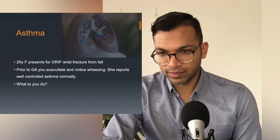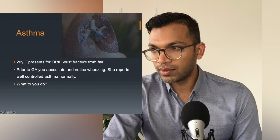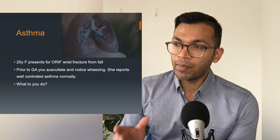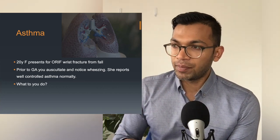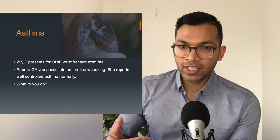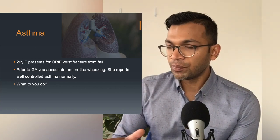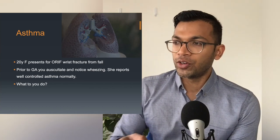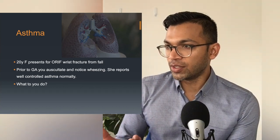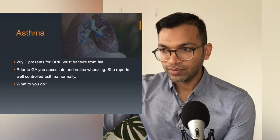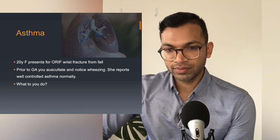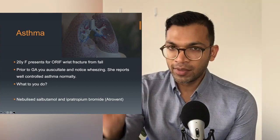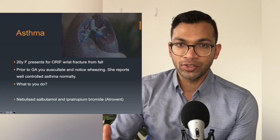Now imagine this patient is in your anesthetic bay. You've just seen her and you definitely need to proceed with this wrist fracture. What can you do right there in the anesthetic room in the five to ten minutes before going to theater? Give her nebulized salbutamol and ipratropium bromide mixed in a nebulizer with a Hudson mask. This is a very simple skill to do as a junior registrar, but it can be really useful for the patient and show a lot of insight to your consultant.